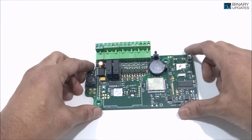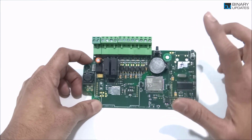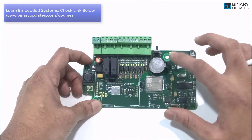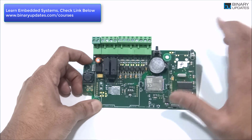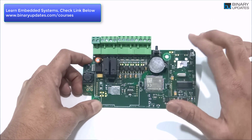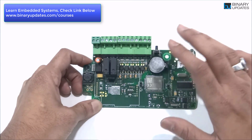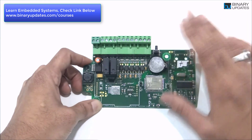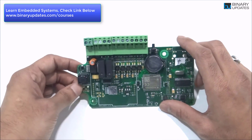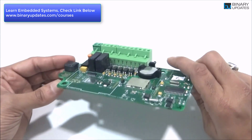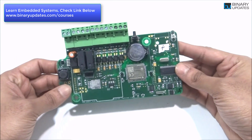Embedded systems are all about designing this kind of circuit board, and they can be found everywhere — in healthcare and medical products, consumer products like air conditioners, washing machines, refrigerators, smart televisions, and everywhere else. From space satellites to everyday devices, there is virtually no product in the 21st century that can be designed without knowledge of embedded systems.